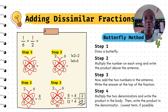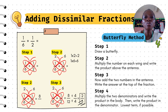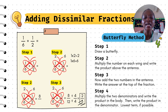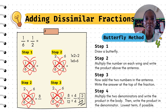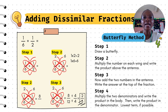Now let's go through an example. For example, you have 1 over 6 plus 1 over 2. First, draw a butterfly diagonally through the two numbers. Then multiply: 2 times 1 gives 2, and 6 times 1 gives 6. Add the antenna numbers: 2 plus 6 gives 8. Then multiply the denominators: 6 times 2 gives 12. So the answer is 8 over 12. We can still break it down — 8 divided by 4 is 2 and 12 divided by 4 is 3 — so the final answer is 2 over 3.